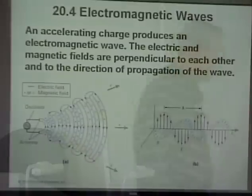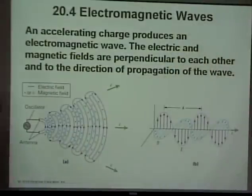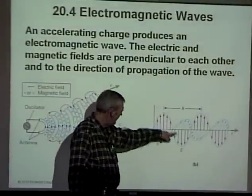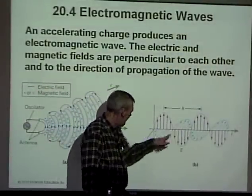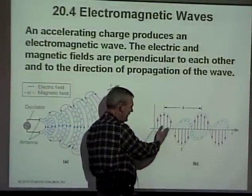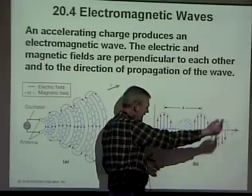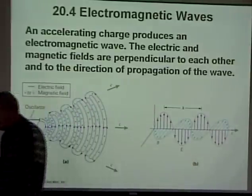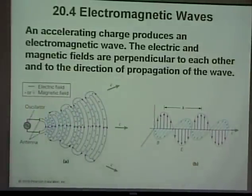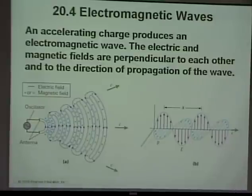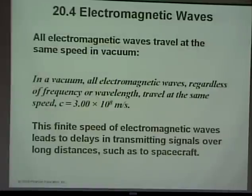Here's your electromagnetic wave: the E-field goes up and down, and the B-field comes out and goes into the board — alternating. When the B-field is at a maximum, so is the E-field.